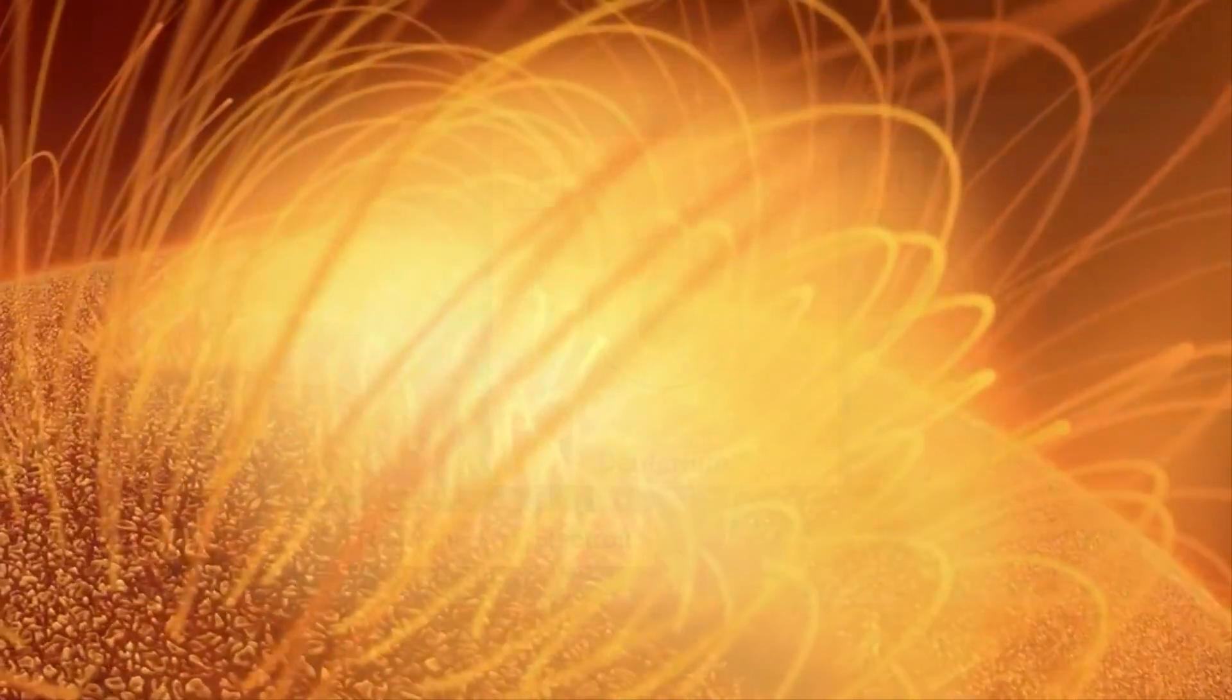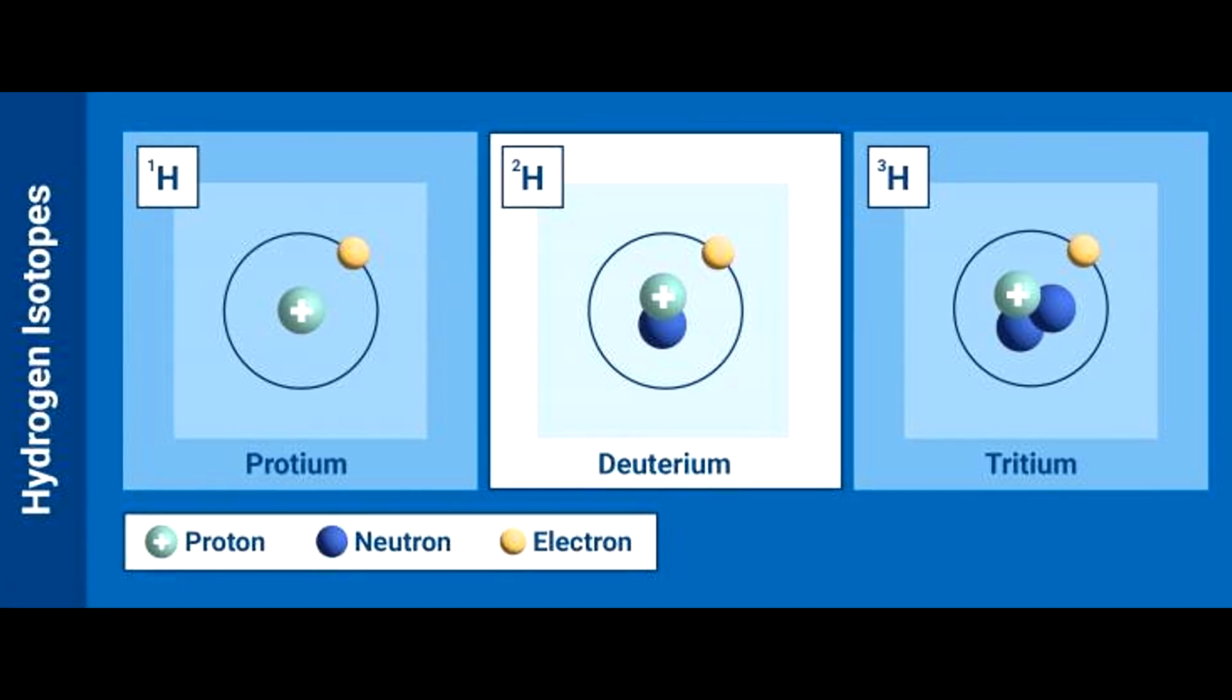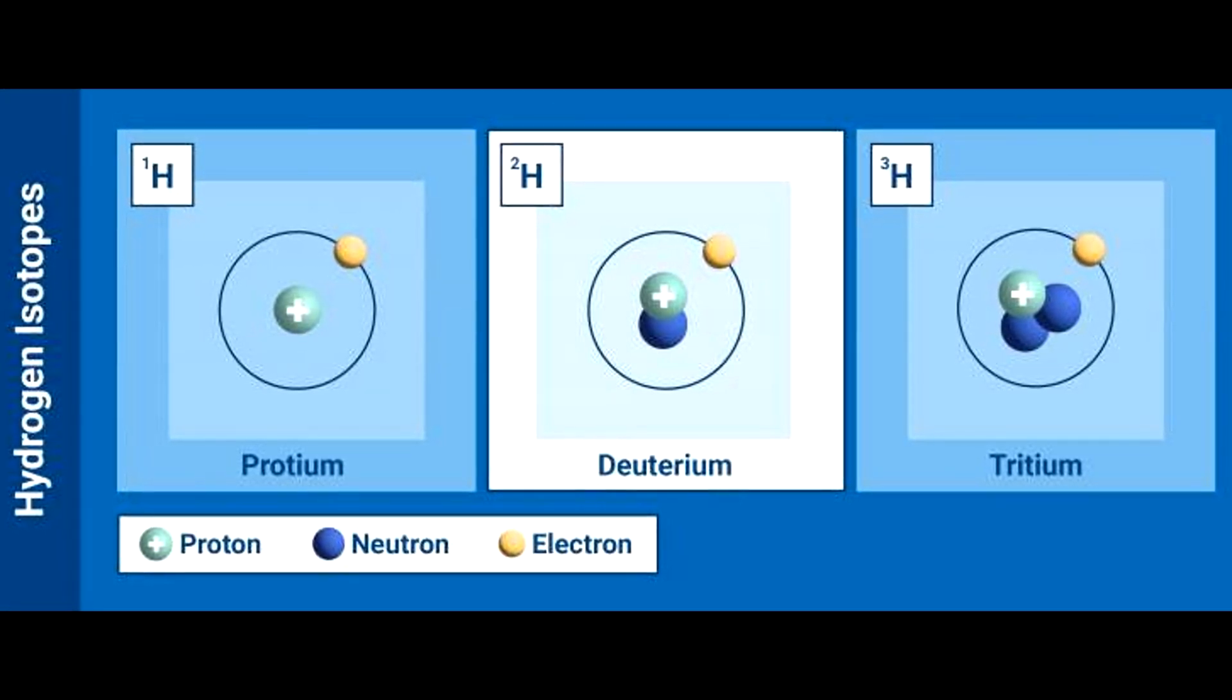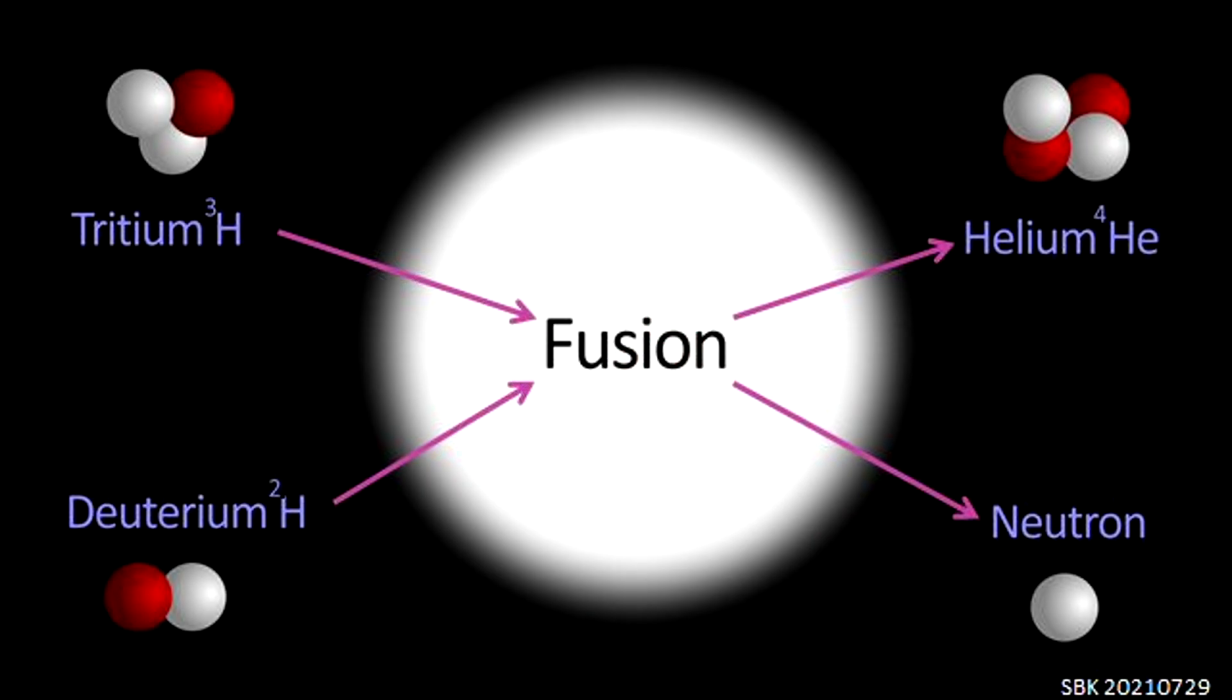When two hydrogen atoms collide, they combine to form one atom, called deuterium, which is lighter than the atoms from which it was formed, and the extra energy is released as a photon. Deuterium, in turn, joins one more hydrogen atom, and helium-3 is formed, and one more photon is released.